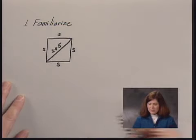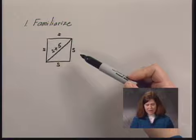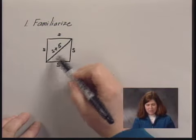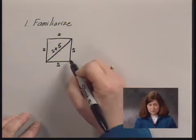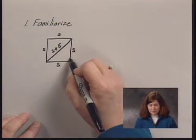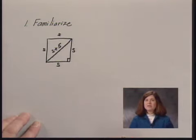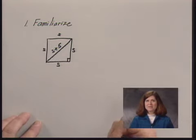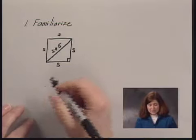Looking at what we have here: we have a square, but inside the square we have a couple of triangles. Since a square has right angles, we also have right triangles. Whenever you see a right triangle, one of the first things that should pop into your mind is the Pythagorean Theorem, and that's what we're going to use to solve this.